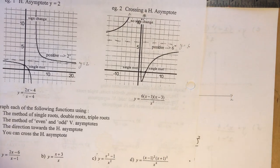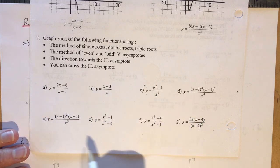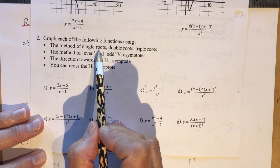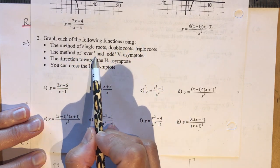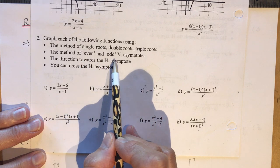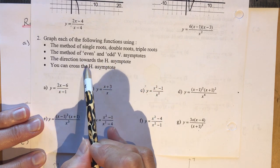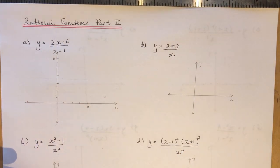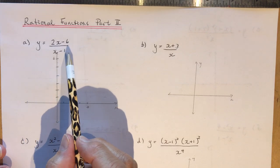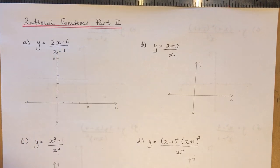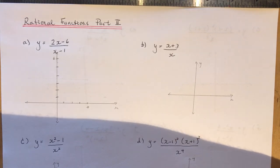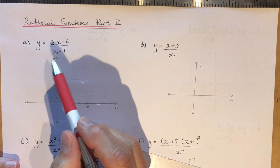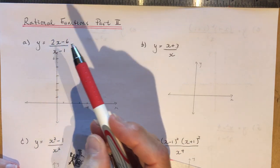Let's do some examples — they're all laid out in the handout. We'll use the method of single, double, and triple roots; the method of even and odd vertical asymptotes; the direction toward the horizontal asymptote; and remember you can cross the horizontal asymptote. First example: y equals 2x minus 6 over x minus 1. The first thing you're looking for is the horizontal asymptote. The ratio of dominant terms — degree 1 over degree 1 — gives 2 over 1, so the horizontal asymptote is y equals 2.